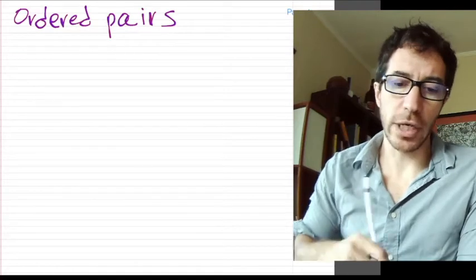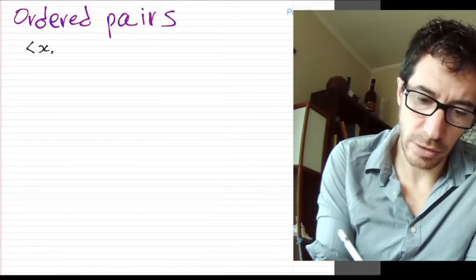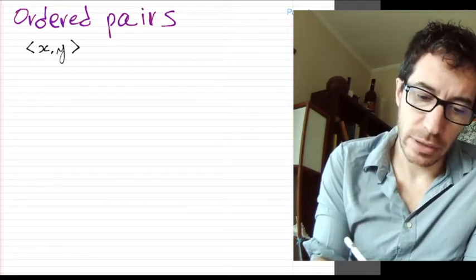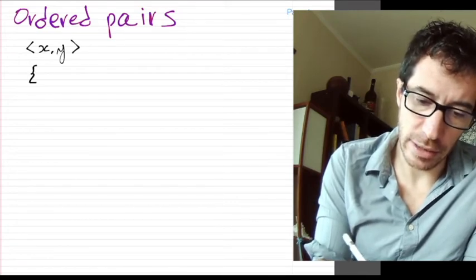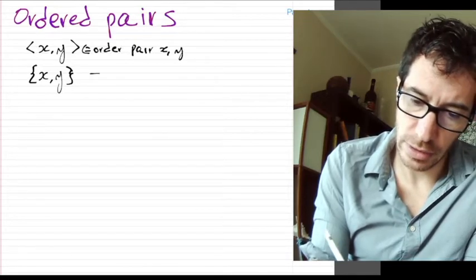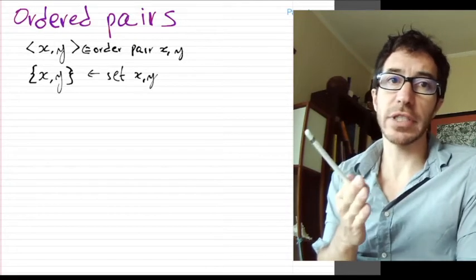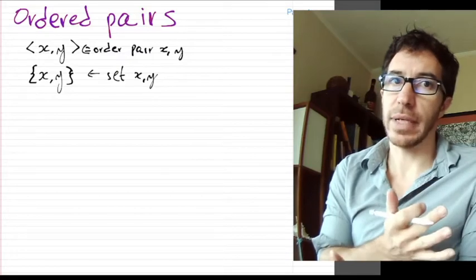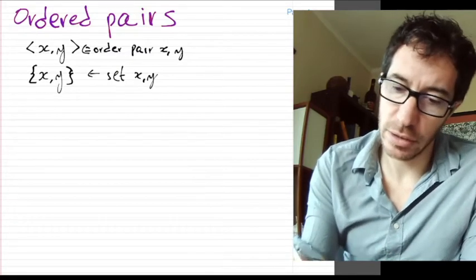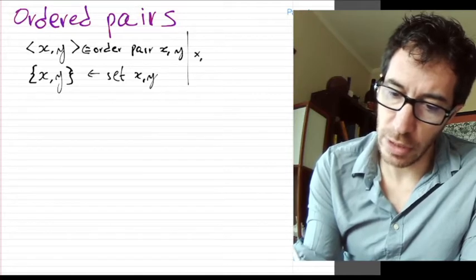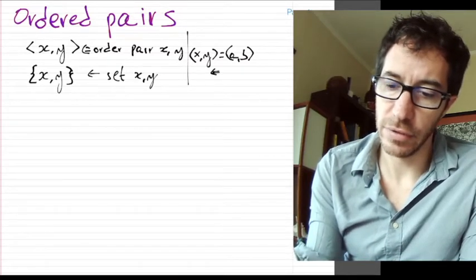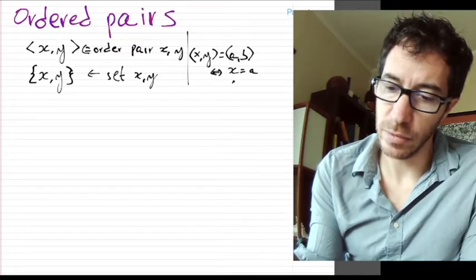Let's start with what are called ordered pairs. An ordered pair is something of the form (x, y). You've seen these before — what is the difference between an ordered pair and a set? The difference is that in the ordered pair the order matters, while in a set the order doesn't matter. So we have that (x, y) equals (a, b) if and only if x equals a and y equals b.